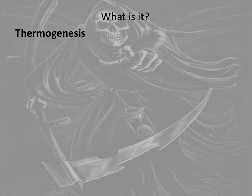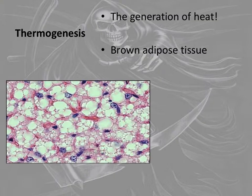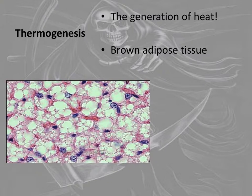Yes, babies have it - baby bears have it. Brown adipose tissue. Do you know why it's called brown? It does look darker. What's the other type of adipose tissue? There's brown adipose tissue and then there is yellow - sometimes they call it white.